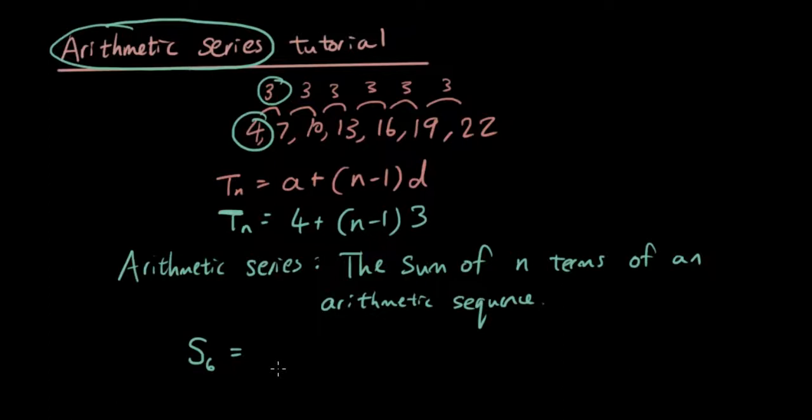Now the way we do that is we get this sequence and we add up the terms from t1 to t6. So it's these terms here. I have to add them all together. So I have 4 plus 7 plus 10 plus 13 plus 16 plus 19. Add it all together and that is my answer.